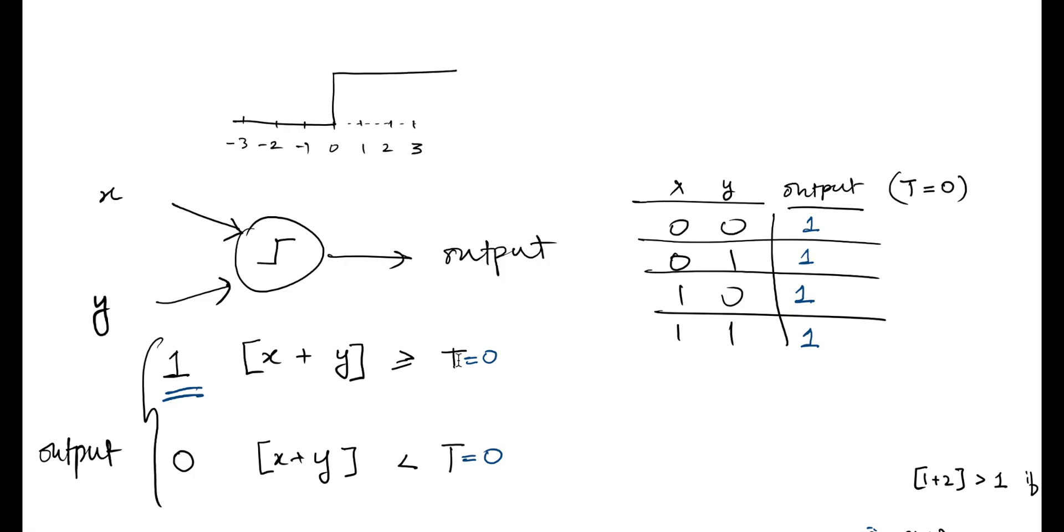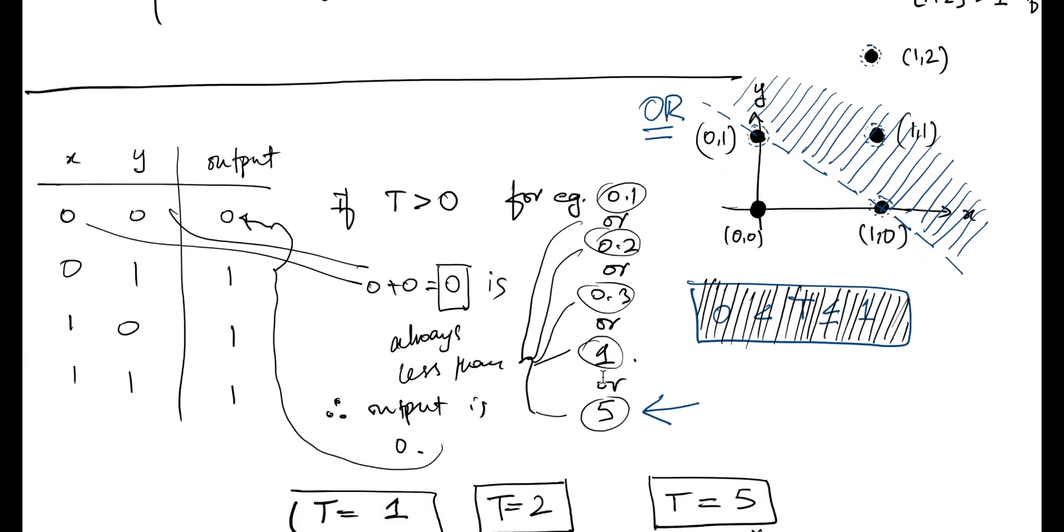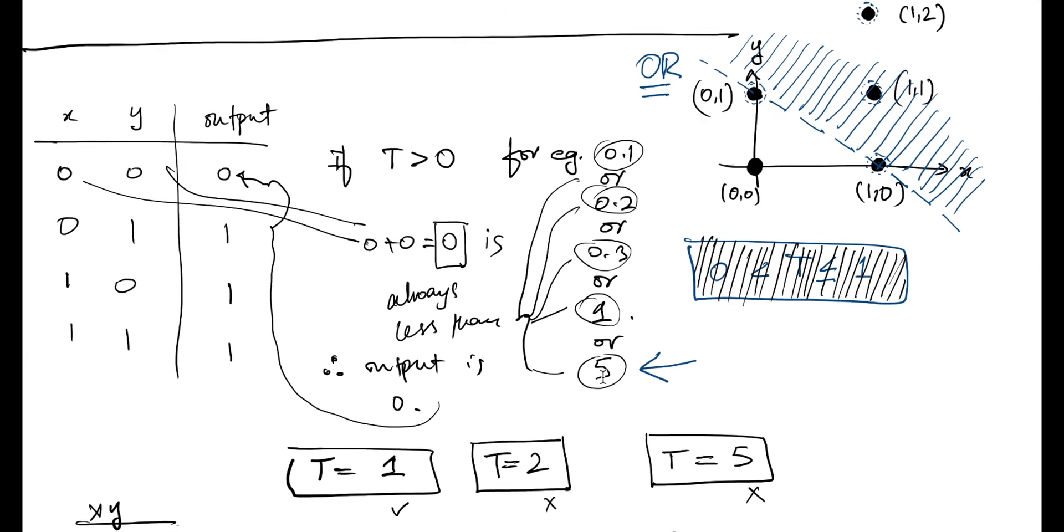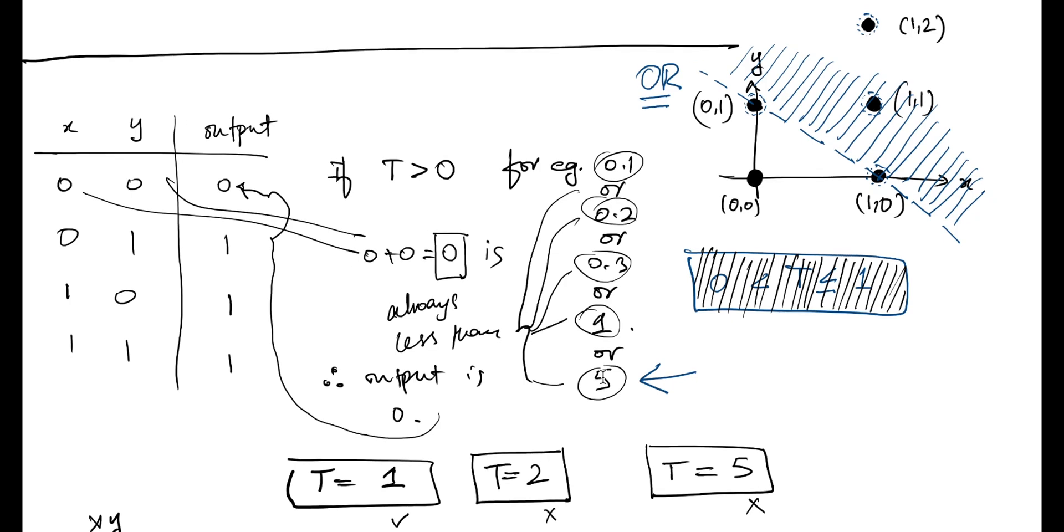We defined these rules and looked into multiple input cases. Based on that, we simply evaluated a sum of these inputs, compared that sum to a particular threshold value, and made our decisions on the outputs. This was another example that we took.